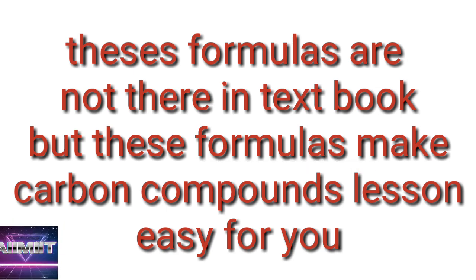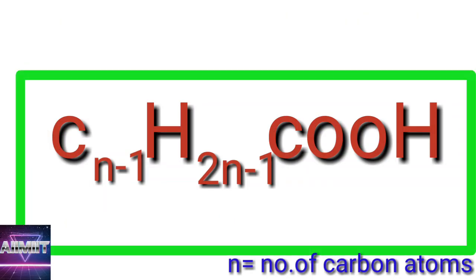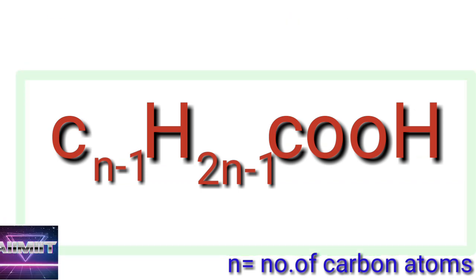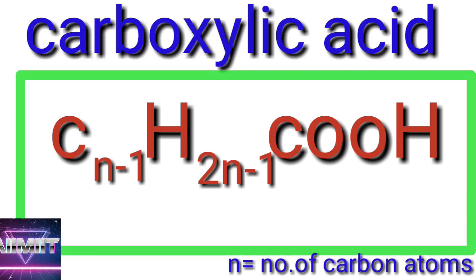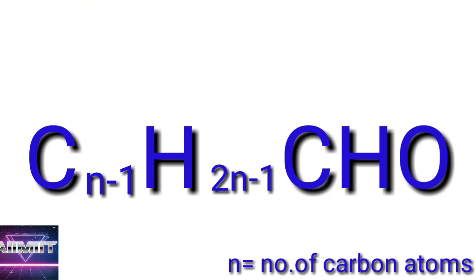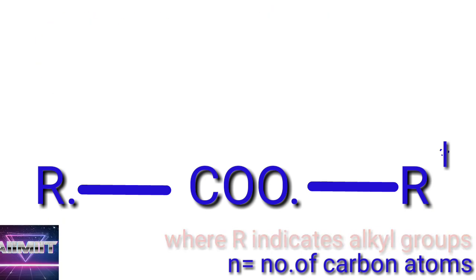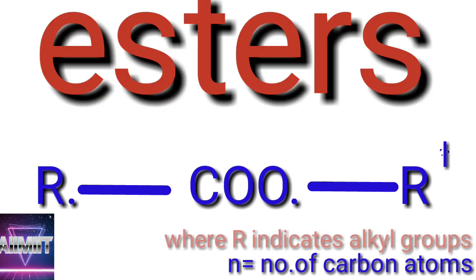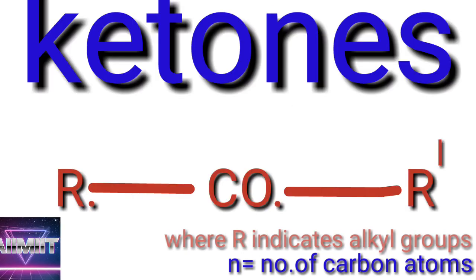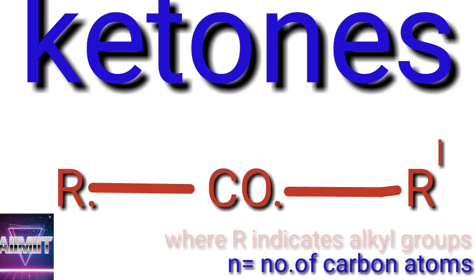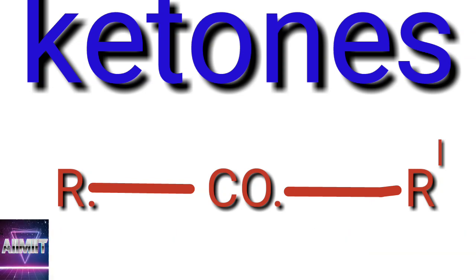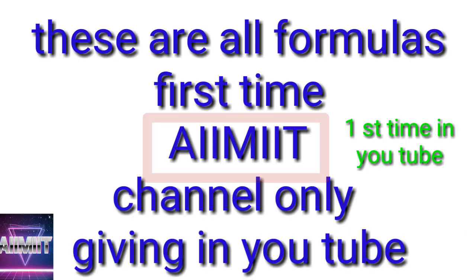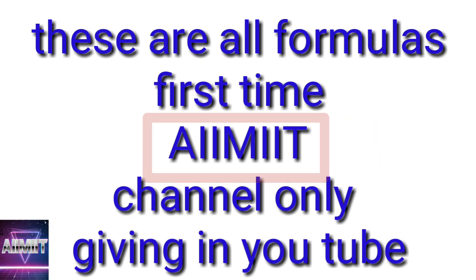Number 27: Carboxylic acids - Cₙ₋₁H₂ₙ₋₁COOH. Number 28: Aldehyde - Cₙ₋₁H₂ₙ₋₁CHO. Number 29: Esters formula - RCOOR', where R and R' indicates alkyl groups. Number 30: Ketones - RCOR', where R and R' here also indicates alkyl groups. So these are the formulas.